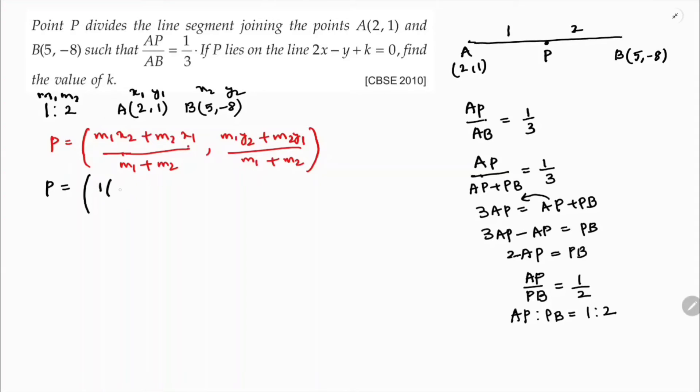M1 is 1, X2 is 5 plus M2 is 2, X1 is 2 by 1 plus 2. M1 is 1, Y2 is minus 8, M2 is 2, Y1 is 1 by 1 plus 2.